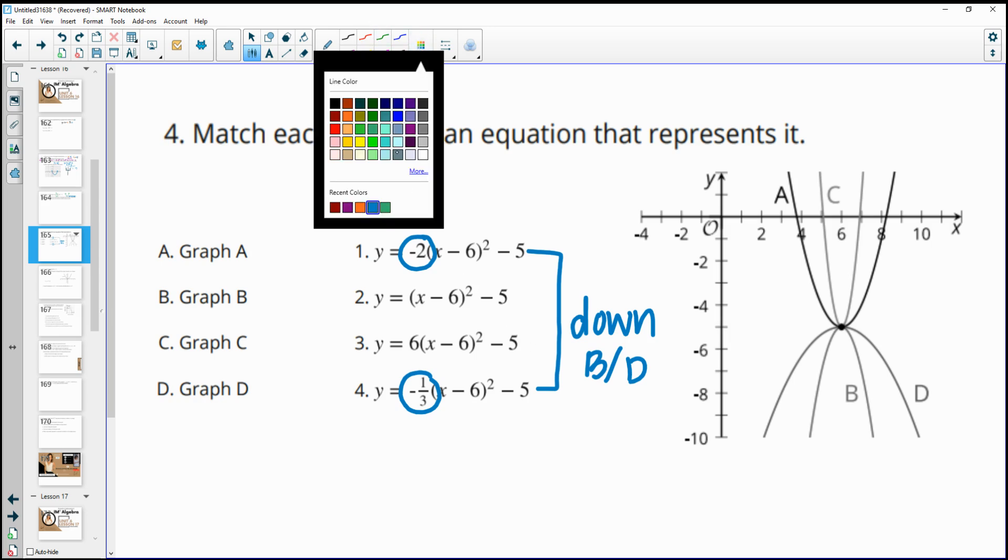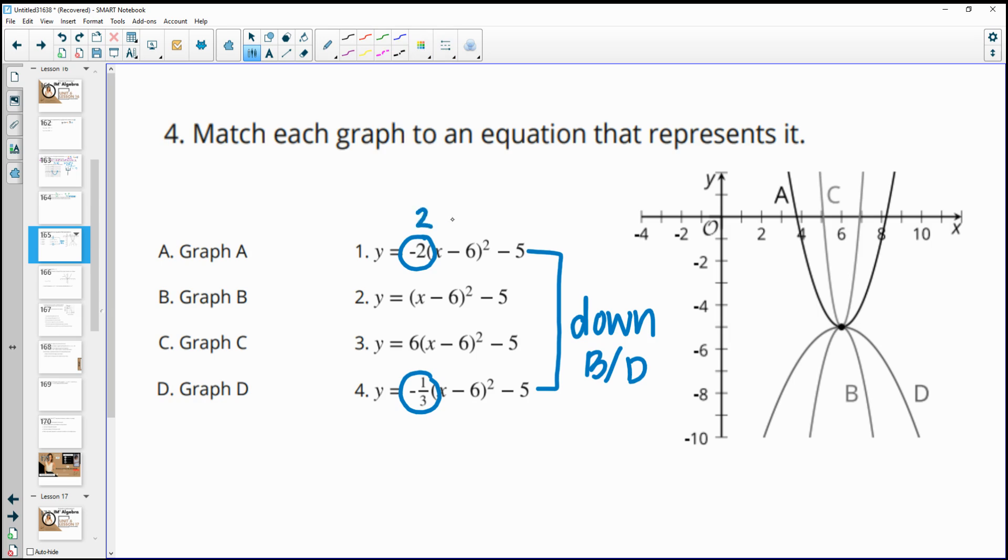Then I know because this one is a 2 and this one is a 1/3, this one is going to be narrower or skinnier than the other one. So that's going to be our b graph. OK? Downward and skinnier is going to be our b graph.